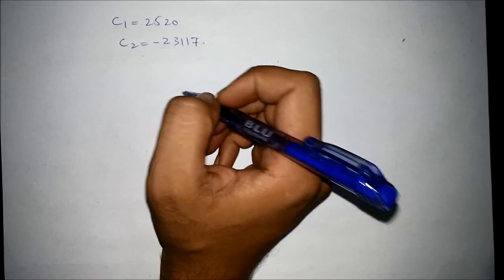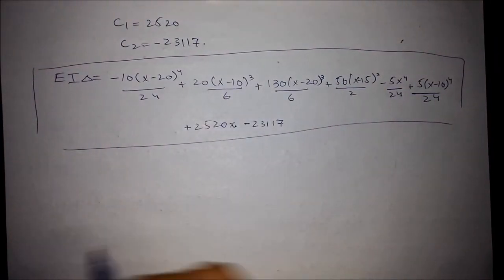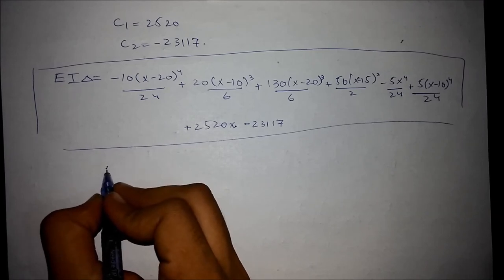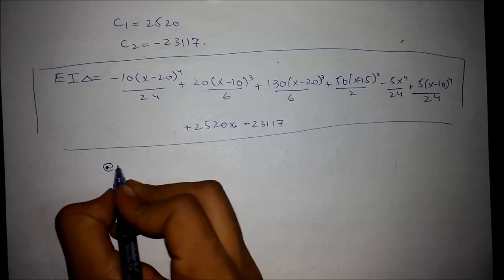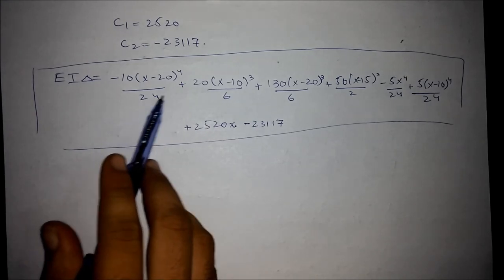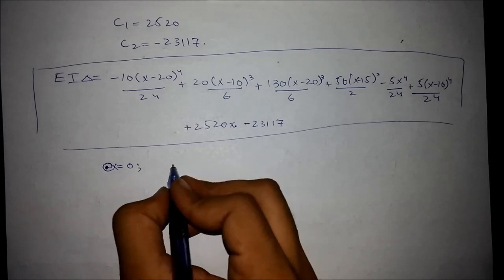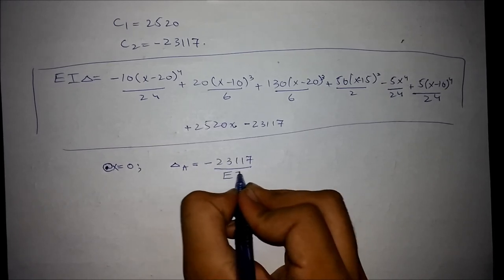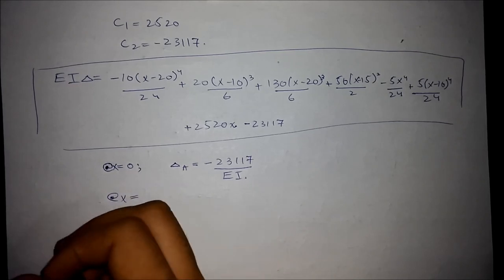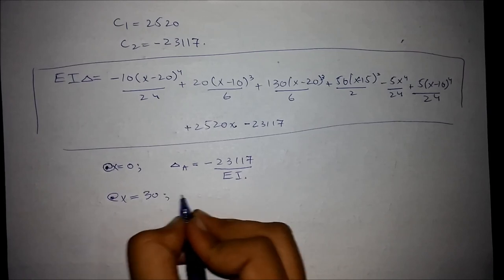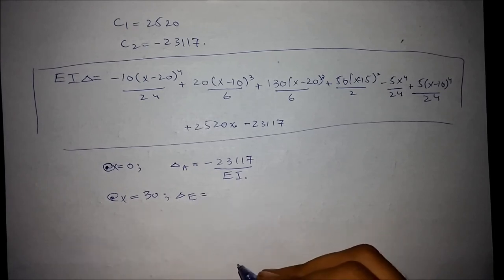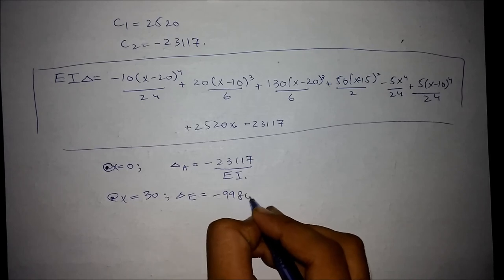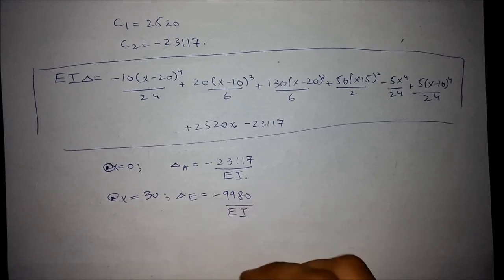Putting these constant values back into the deflection equation and evaluating at point A, where x = 0, gives the deflection δ_A = −9980/EI. The negative sign indicates that the beam is deflecting downward at point A.